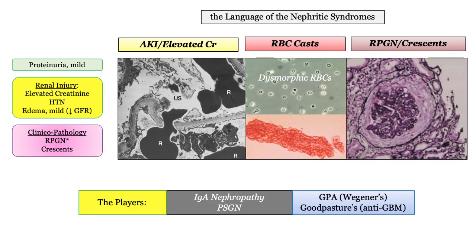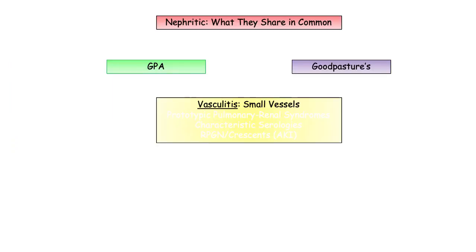For those who haven't reviewed the previous recordings, here are the hallmarks or board language of the nephritic disorders, including glomerular bleeding with injury — expressed by elevation of the creatinine — hypertension, and mild edema and/or proteinuria. When the injury is acute and severe, we call that rapidly progressive or crescentic glomerulonephritis.